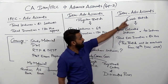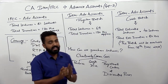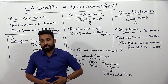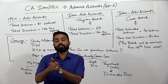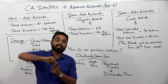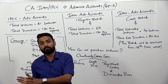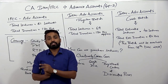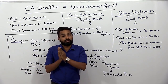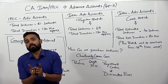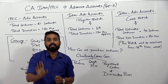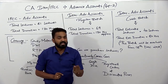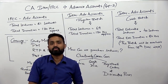अब what's new - for the first time Intermediate Advance Accounts का मैं crash batch plan कर रहा हूँ। यह crash batch किन बच्चों के लिए है? दोनों type के बच्चों के लिए - वो बच्चे जिन्होंने पहले किसी भी faculty से CA Intermediate Advance Accounts की classes ली हैं और वापस से revise करना चाहते हैं, वो मेरा crash batch purchase कर सकते हैं। दूसरा वो बच्चे जिन्होंने आज तक Advance Accounts नहीं पढ़ा है लेकिन कम समय में पूरा course complete करना चाहते हैं - यह crash batch उनके लिए भी है। Crash batch सिर्फ repeaters के लिए नहीं है, freshers भी देख सकते हैं - मैं YouTube पे demo lectures डालूँगा।